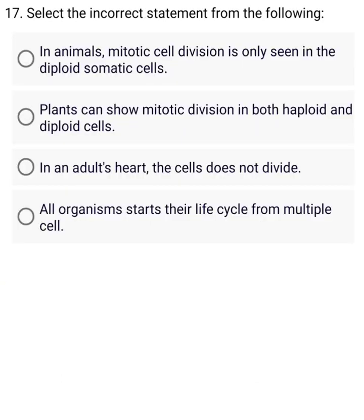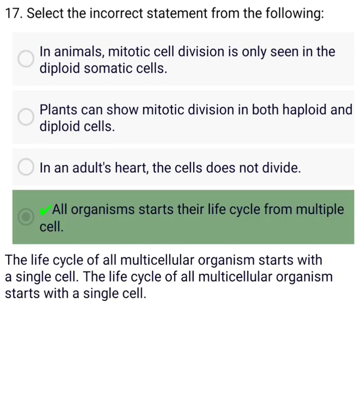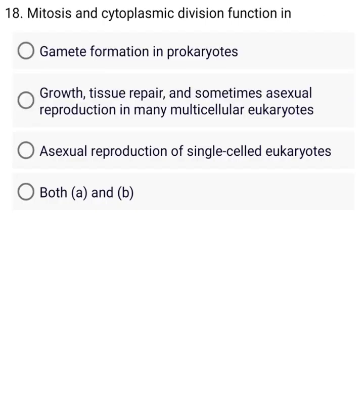Select the incorrect statement from the following. A. In animals, mitotic cell division is only seen in the diploid somatic cells. B. Plants can show mitotic division in both haploid and diploid cells. C. In an adult's heart, the cells do not divide. D. All organisms start there — Mitosis and cytoplasmic division function in A —